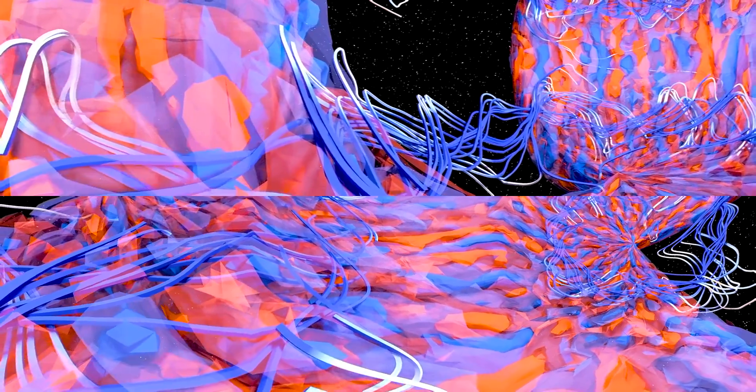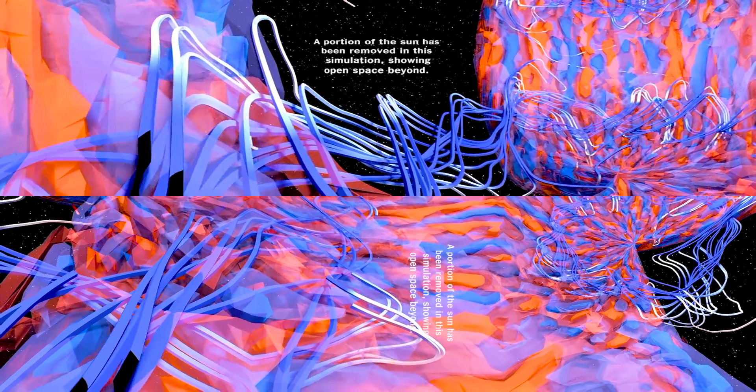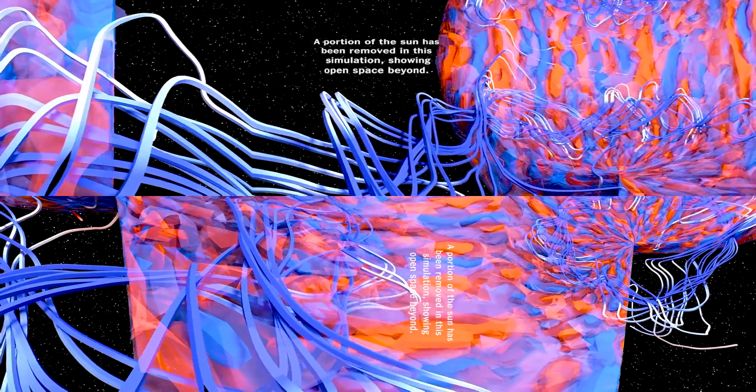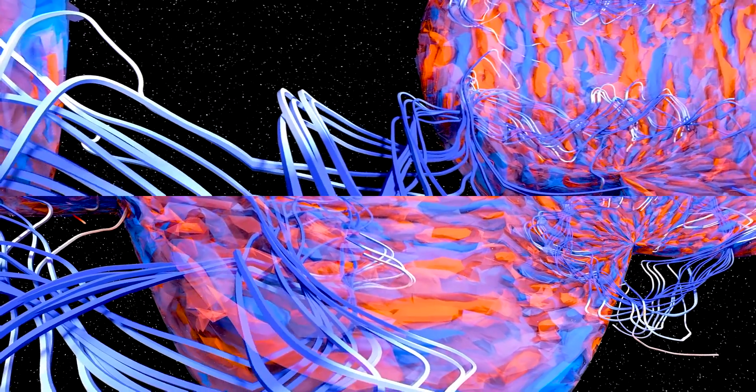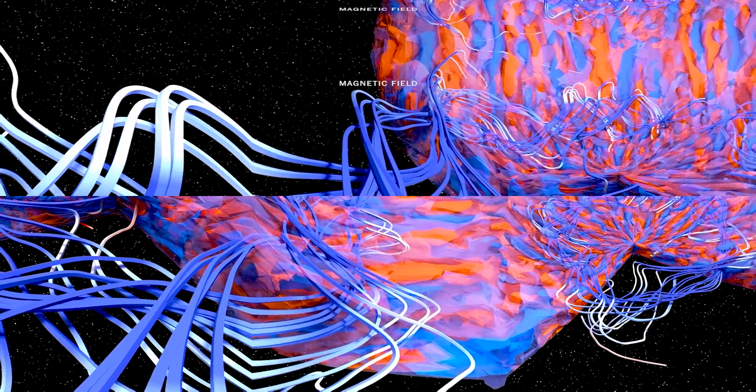You're standing inside a simulation of the interior of a star similar to our Sun. The blue strands you see represent the Sun's magnetic field. A second set can be seen above in the opposite hemisphere of the Sun.